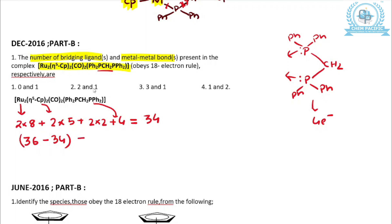The total electron count is 34, which is 2 electrons less than 36, which the complex needs to be stable. These 2 electrons result in the formation of 1 metal-metal bond. When it forms 1 metal-metal bond, the total becomes 36 and the complex becomes stable. So it is resulting in the formation of 1 metal-metal bond.